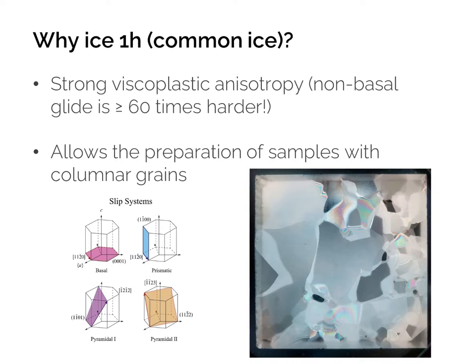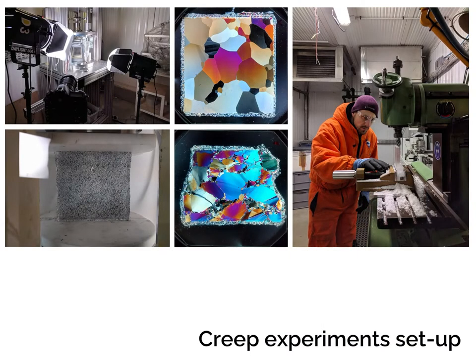Secondly, it allows the preparation of samples with columnar grains, as shown here in this image, where there is a single grain from the bottom to the top of the sample, and the grain boundaries are arranged approximately perpendicular to the observation surface, which facilitates a lot the interpretation of the microstructures and the relation between grains.